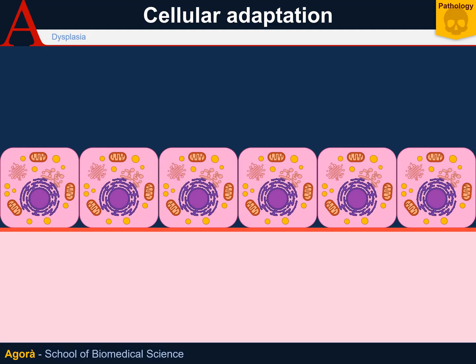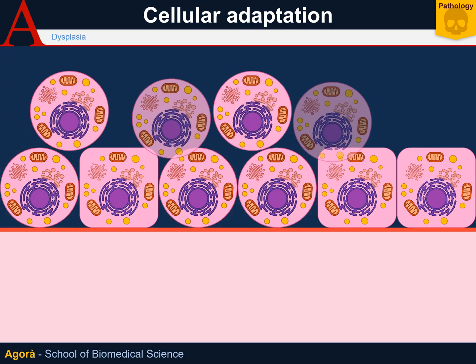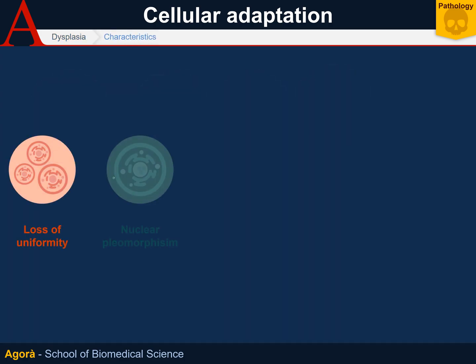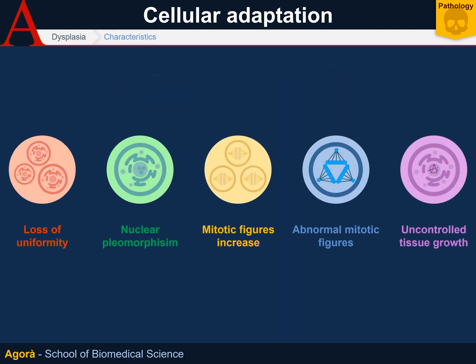Dysplasia is the most extreme form of adaptation, where more mature tissue cells are replaced by immature cells proliferating at a higher pace. Dysplasia isn't cancer yet, but it's actually the step before neoplasia. Its distinctive characteristics are loss of uniformity of cells, nuclear pleomorphism, mitotic figure increase, abnormal mitotic figures, and uncontrolled tissue growth.